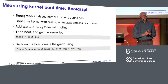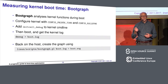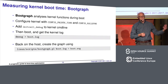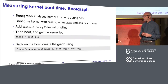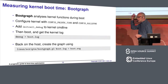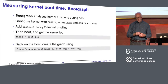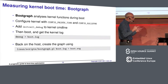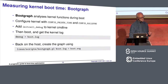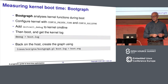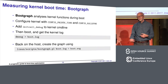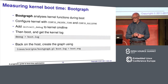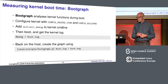The third tool is bootgraph - a kernel feature allowing us to graph what happens during kernel initialization. You turn on a couple of configuration options and set 'initcall_debug' on the kernel command line. That causes a bunch of stuff to be printed out which you capture with dmesg, redirected into boot.log. Then you use bootgraph.pl, a Perl script that is part of the kernel source code, which takes that log and generates a nice graph.